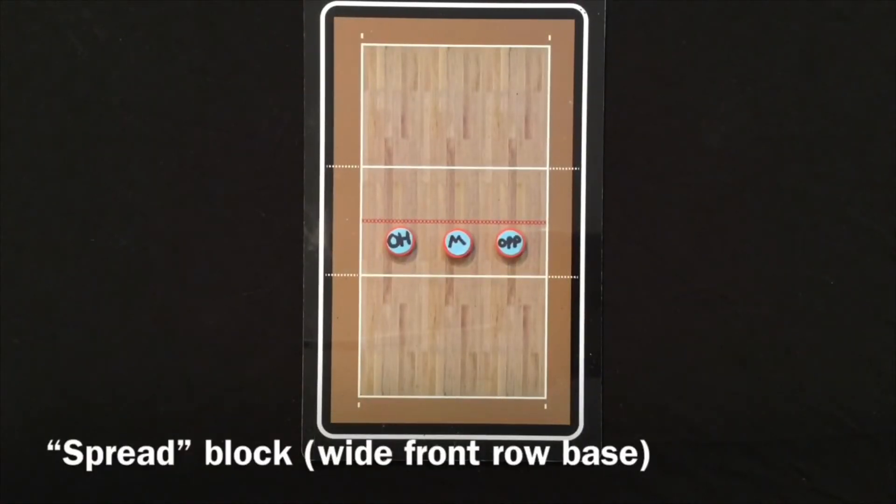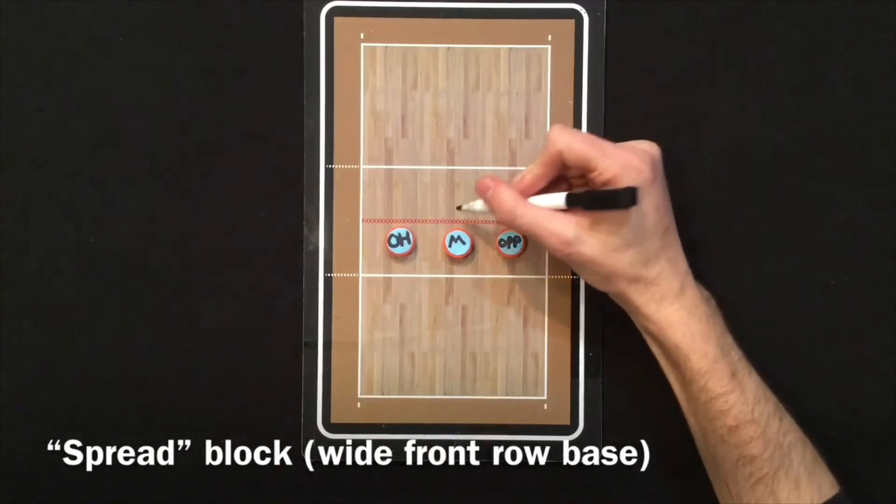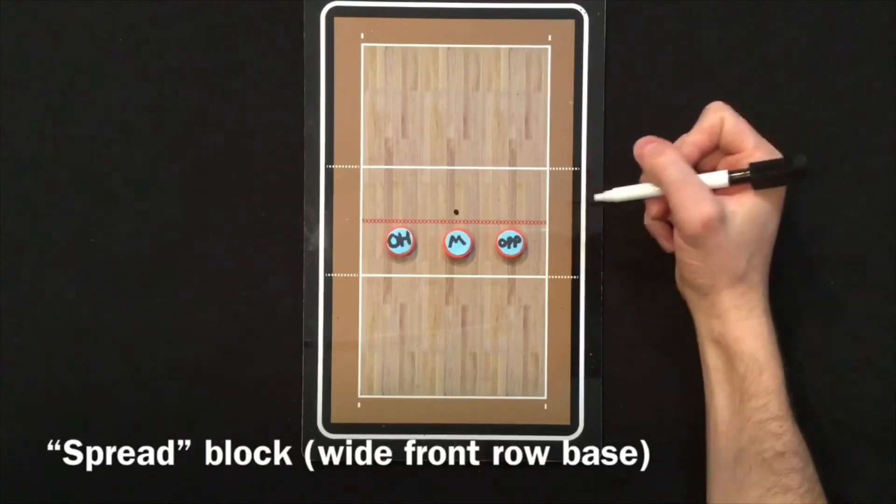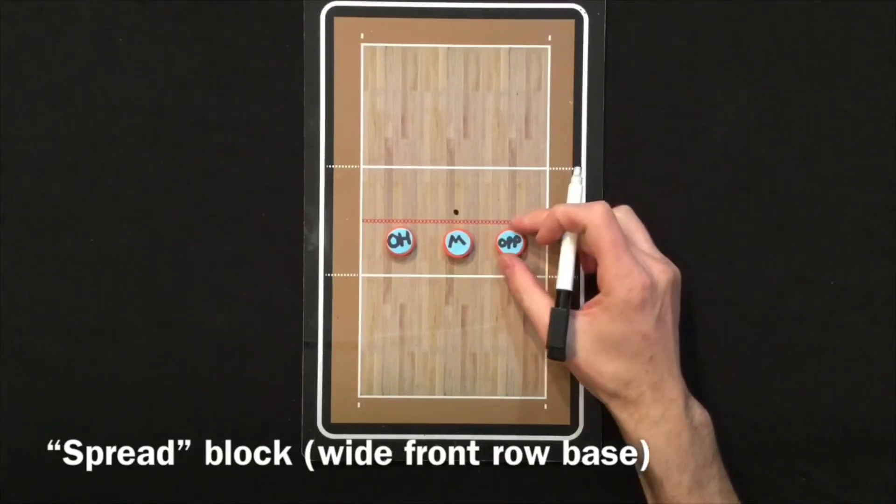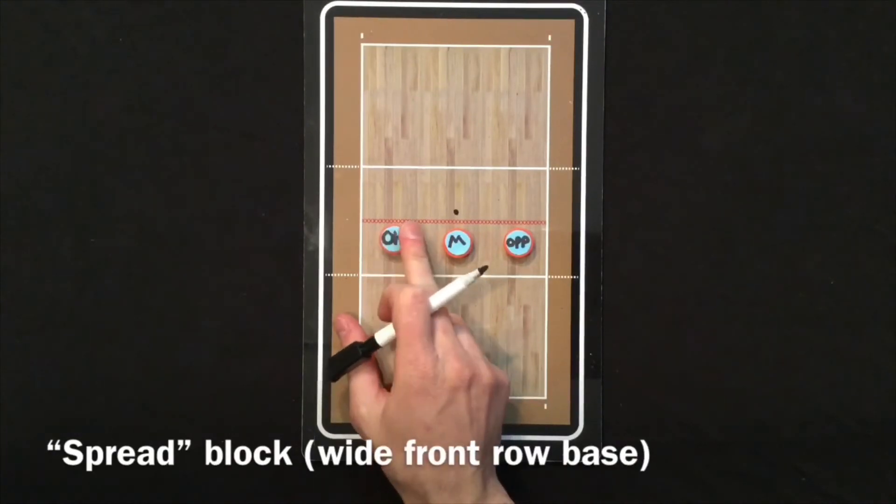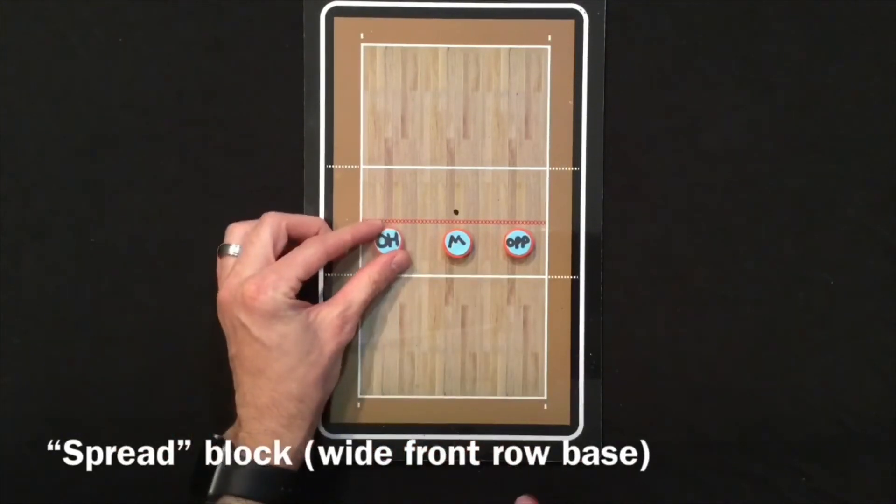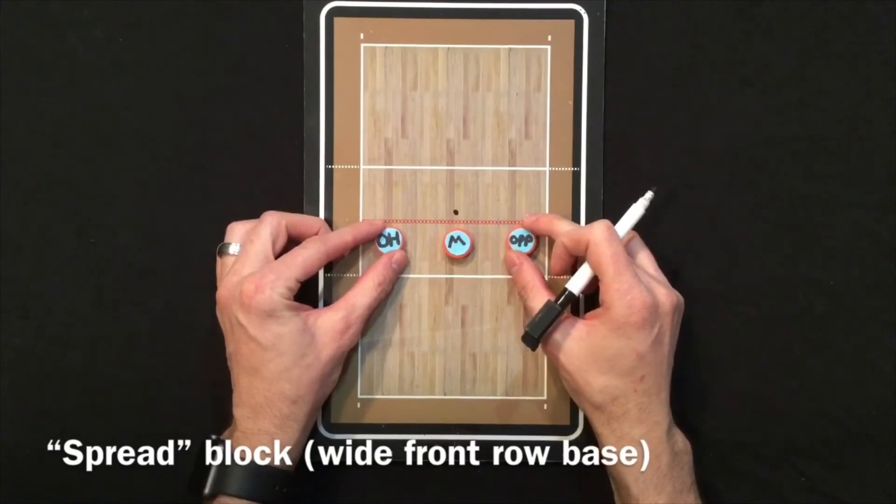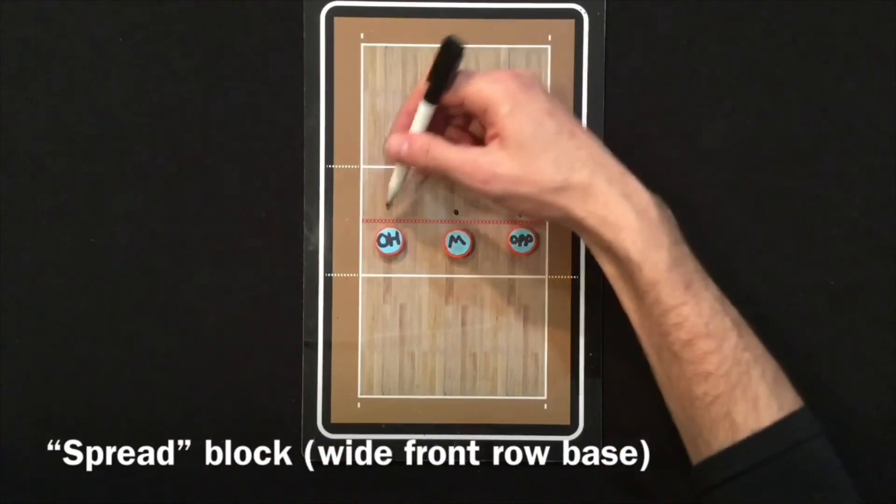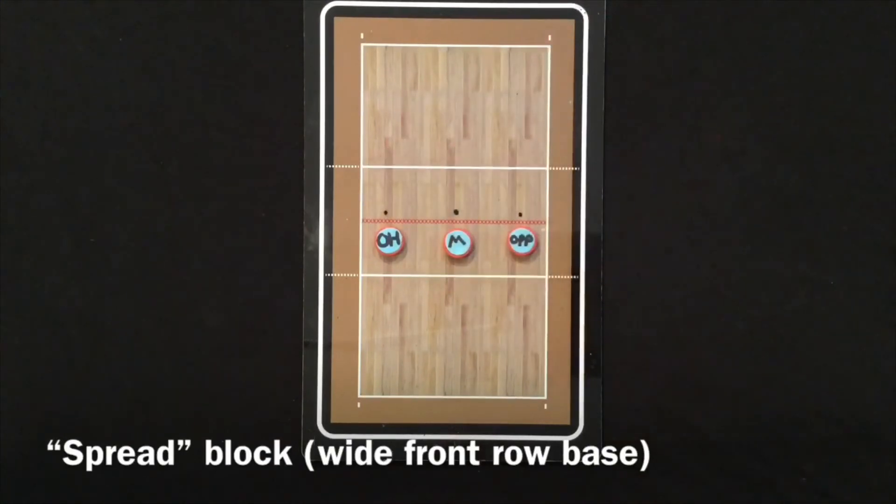When you get to the upper levels, you can scheme a little bit differently. So if your opponent is more of an outside attacking team, you can do a spread block or spread base. So basically you're going to spread out your base and commit a little bit more to the outside hitters rather than the middles.